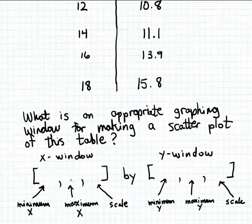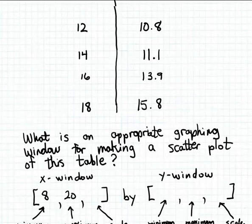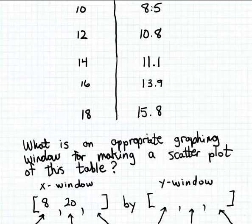I'm going to give a little room on both sides, so I'll use a minimum X value of 8 — a little below 10 — and a maximum X value of 20 — a little above 18. This prevents the points, like (10, 8.5) or (18, 15.8), from sitting right on the edge of the graph. For tick mark spacing, I'll use 2. A spacing of 1 would give too many tick marks, and more than 2 might make the scatter plot difficult to read.